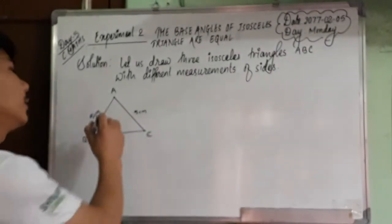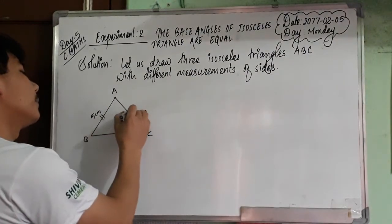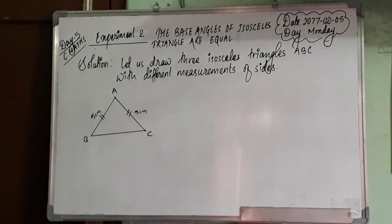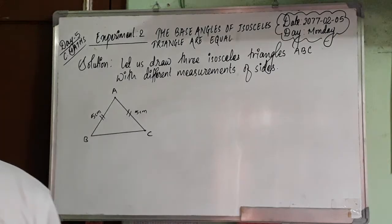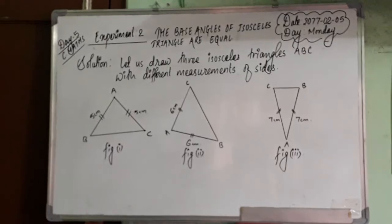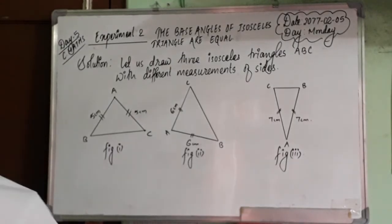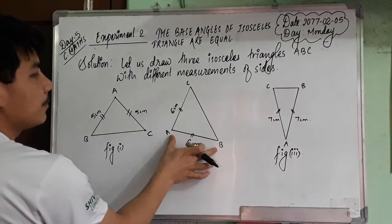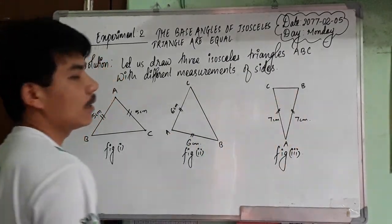The other triangle, these two sides are equal, so this is an isosceles triangle. Make the other two isosceles triangles the same way. Okay, this is figure A, this is figure B.